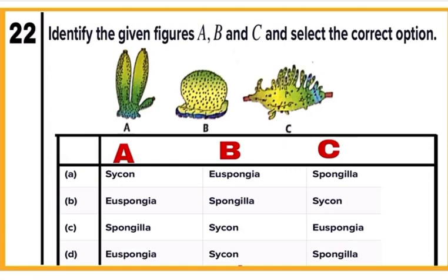Question 22: Identify animals A, B, and C in the figures. All three are examples of Porifera. A is Sycon, B is Spongia, and C is Spongilla. Mark A as the correct answer.